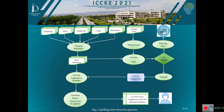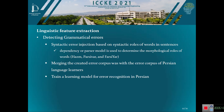In the grammatical error detection step, different methods were tested. Let me talk about the final method that reached the best result. In machine learning methods, we need a large dataset to train on. Persian is one of the under-resourced languages that faces a lack of data, so one method to address this problem is data augmentation, which in this special domain is called error injection. Syntactic error injection based on syntactic rules of words in sentences was performed, using a dependency parser model to determine the morphological rules of words. We tested the dependency parsers of the Hazm, Parker, and Parsivar libraries, and finally the Hazm library was chosen. After curating an appropriate dataset, the chosen deep learning model was trained on the data and a classification model to detect grammatical errors was built.